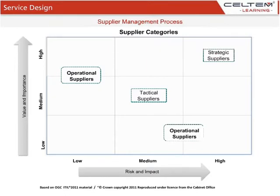Operational Suppliers: These relationships would normally be managed by junior operational management and would involve infrequent but regular contract and performance reviews, such as an internet hosting service provider supplying hosting space for a low usage, low impact website or internally used IT service.